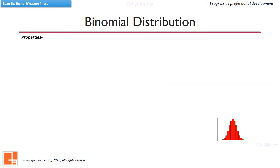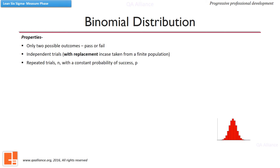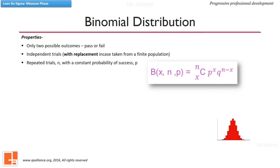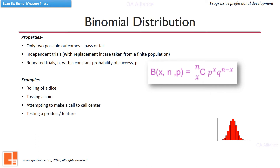The binomial distribution is applicable where there are only two kinds of possible outcomes. For example, pass and fail, or go or no-go. Suppose a binomial experiment consists of N independent and repeated trials and results in X successes. If the probability of success on an individual trial is P, then the binomial probability is derived from this equation. Rolling of dice, tossing a coin, a call attempt to a call center, and testing a product are some examples which follow binomial distribution.